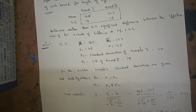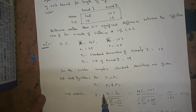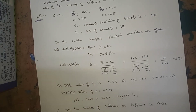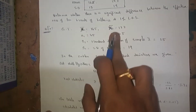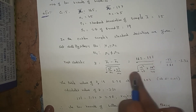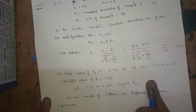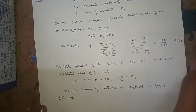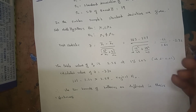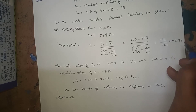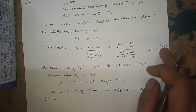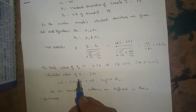Null hypothesis H0: mu1 equals mu2. Alternative hypothesis H1: mu1 is not equal to mu2. The test statistic is Z equals x1 bar minus x2 bar over square root of s1 square over n1 plus s2 square over n2. Substituting: Z equals 165 minus 177 over square root of 15 squared over 45 plus 19 squared over 45, which simplifies to minus 12 over the square root of 361.